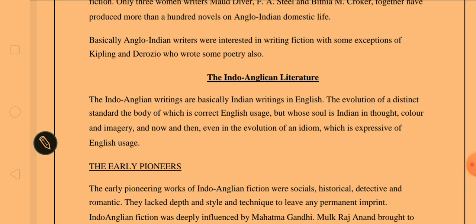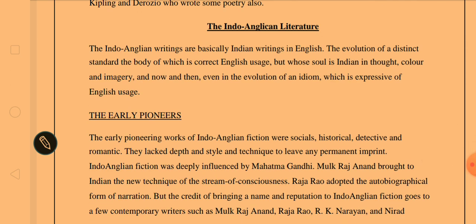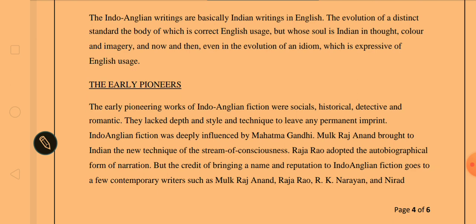Now let's move to Indo-Anglican — or Indo-Anglian — literature. The Indo-Anglian writings are basically Indian writings in English: a body of correct English usage whose soul is Indian in thought, colour, and imagery, and which occasionally evolves an idiom expressive of English usage. Indian writers writing in English can express their own country more vividly than Anglo-Indian writers because their soul is Indian, their thoughts are Indian, and the colours and imageries are all familiar to them.